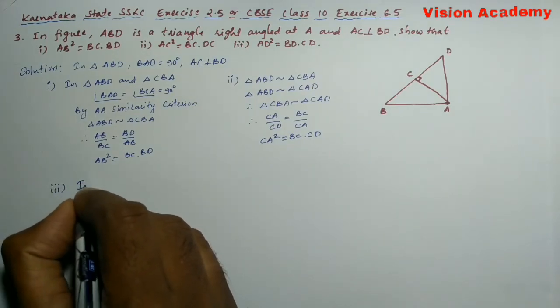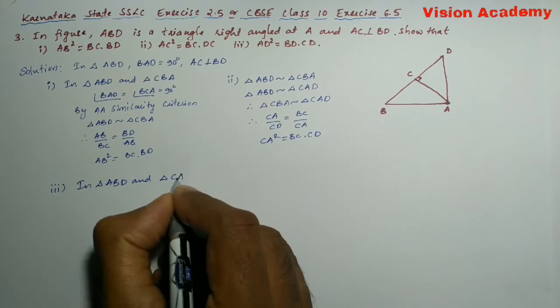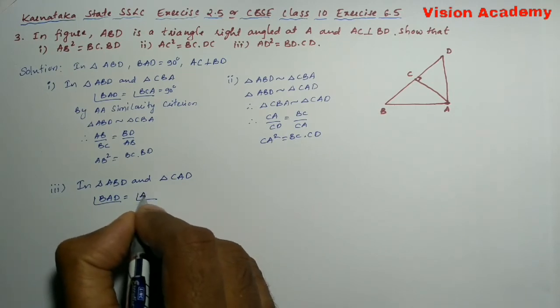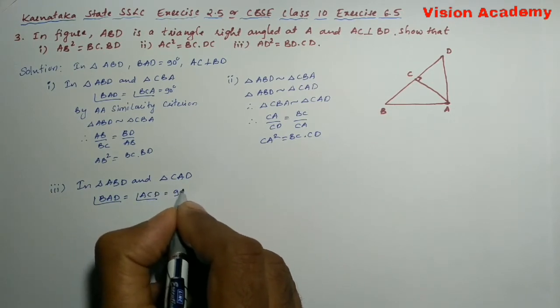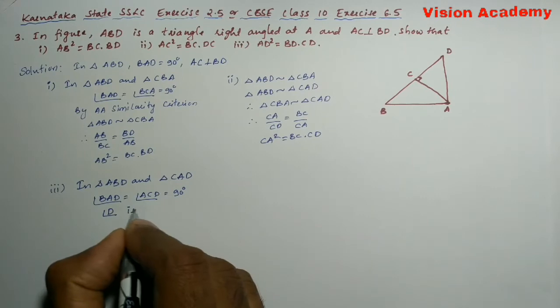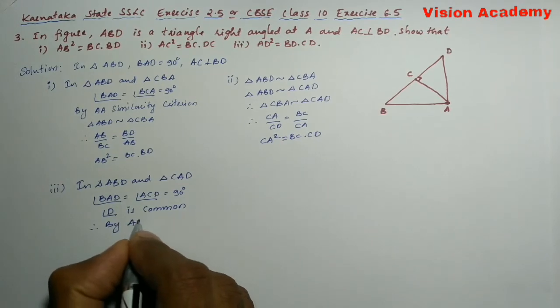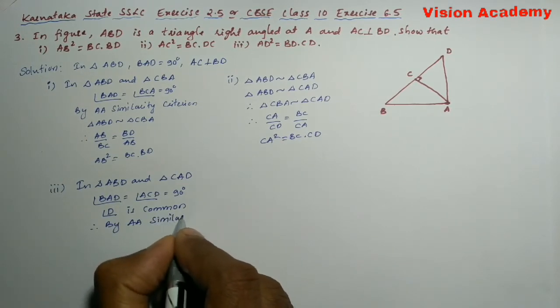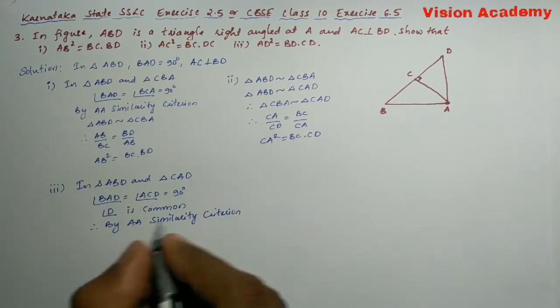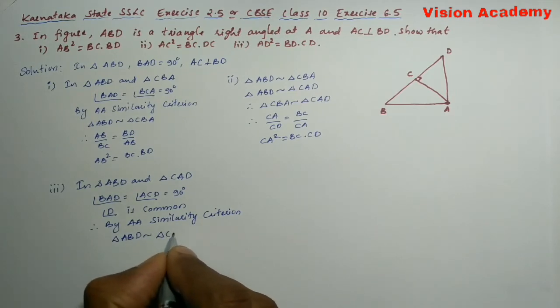Here in triangle ABD and triangle CAD, angle BAD is equal to angle ACD, which is equal to 90 degrees. Here angle D is common angle. So therefore, by angle-angle similarity criterion, triangle ABD is similar to triangle CAD.